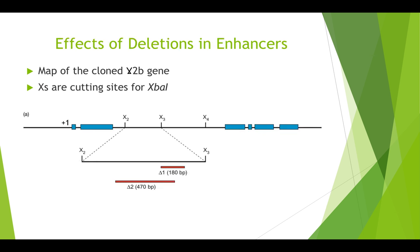Enhancers are frequently found upstream of promoters they control, but this is definitely not a strict rule. Tonegawa and colleagues were studying a gene for a heavy chain of mouse antibody called the gamma2b antibody, where the enhancer was speculated to lie within the gene.